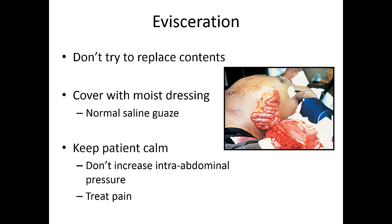Evisceration is another type of common abdominal injury. Don't try to replace any contents that are outside the body. The best thing you can do is stabilize them, keep them moist — not soaked with normal saline, but a moist dressing so it doesn't get sticky or rip more tissue. Cover with a moist sterile dressing if you can. Most importantly, try to keep the patient calm and treat their pain so they're not increasing abdominal pressure and making the evisceration worse.